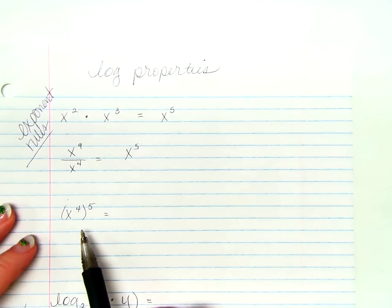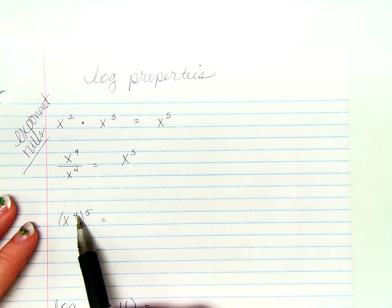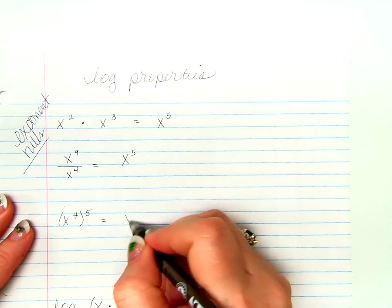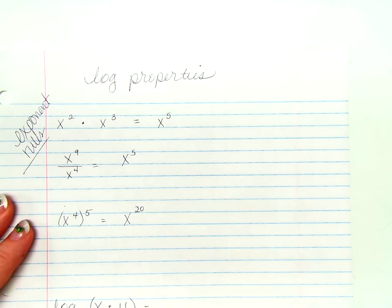If we have a power being raised to a power, what's the rule here? X to the 20th, right? We multiply.